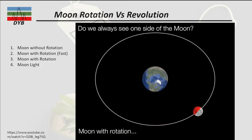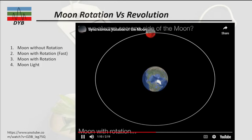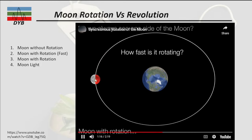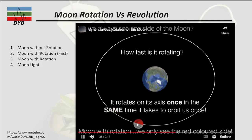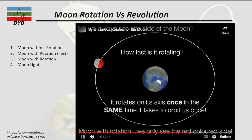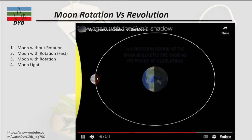The moon rotates once in the same time it takes to complete one orbit. You can see the red part appearing from one side, taking one full rotation to return. The rotating and revolving time is the same — the time it takes to travel from one point back to that point is the same time it takes to rotate around its axis. That is why we only ever see the red part, which is the near side of the moon.